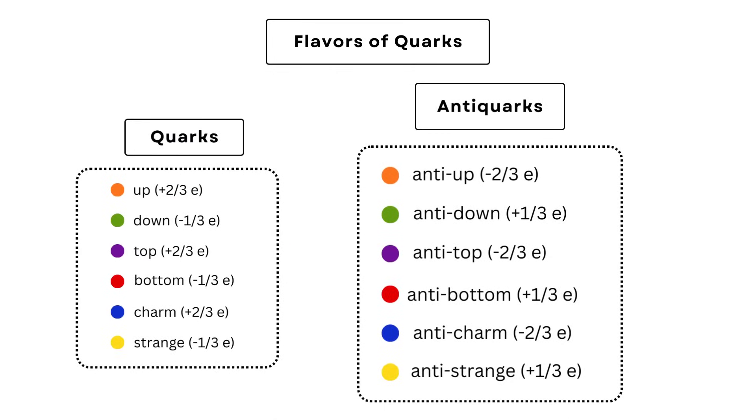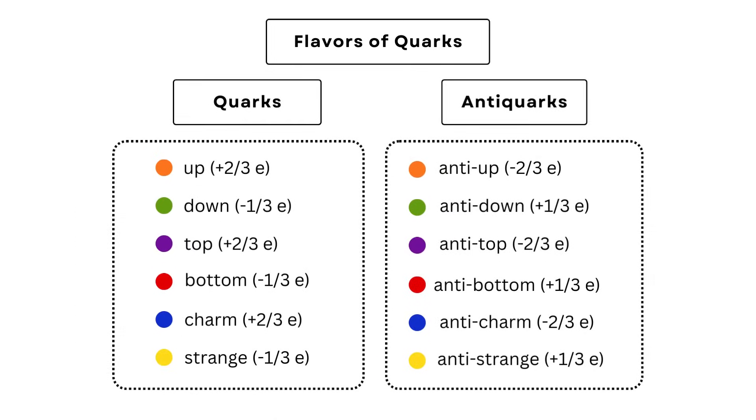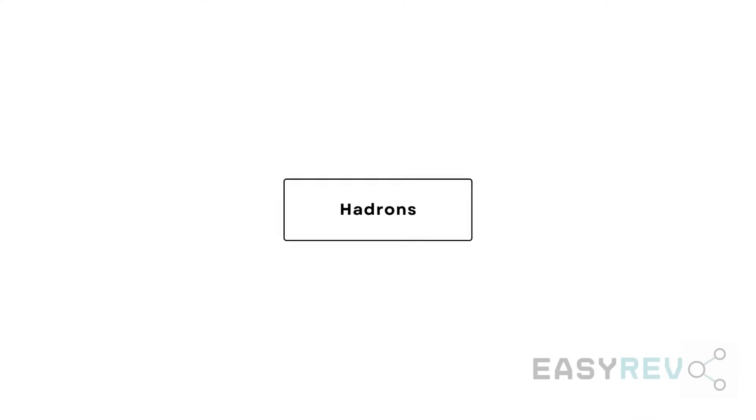And since these are fundamental, we also have their antiparticle versions that we call antiquarks. Now, coming back to the family of hadrons, there are two other subcategories. We have the mesons and the baryons.